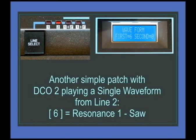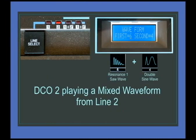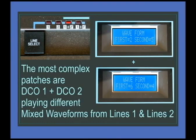Oscillator two is playing a single waveform, the resonant saw wave, and then we add the second wave to it, which is the double sine wave, to give our mixed waveform. If we then put line one and line two together we have our most complex patches, DCO1 and DCO2 both playing the mixed waveforms.